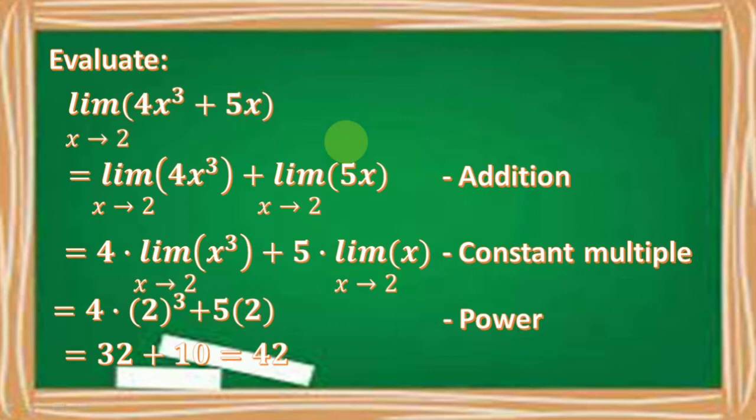And lastly, applying the power theorem, we have 4 times 2 cubed plus 5 times 2. So it is equal to 32 plus 10 which is equal to 42.